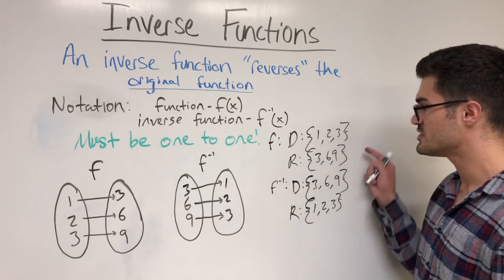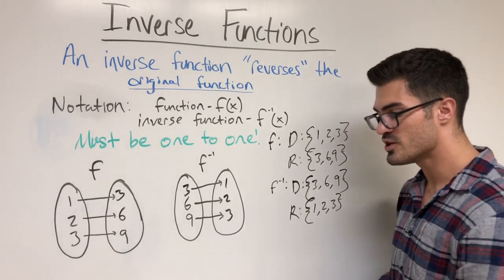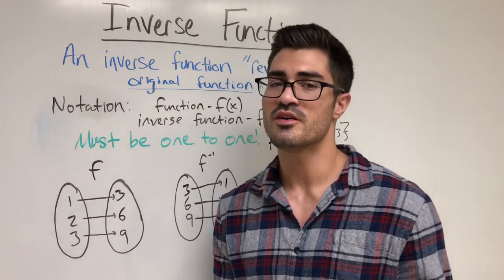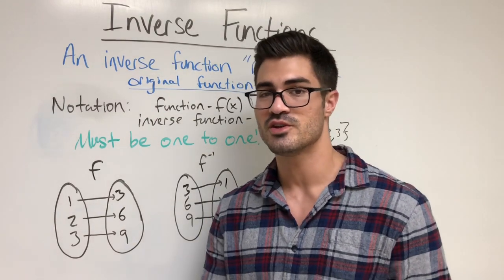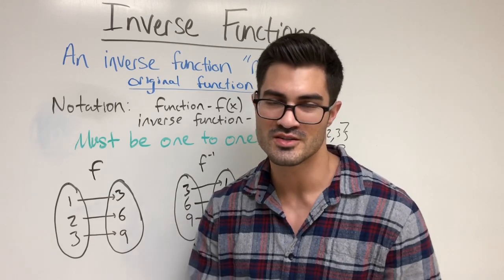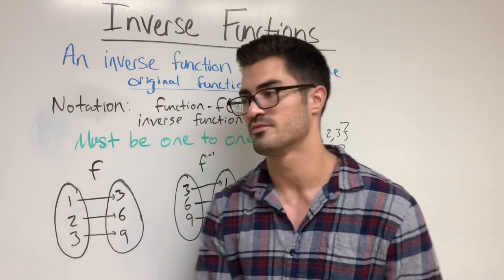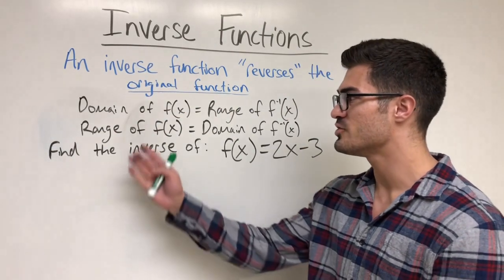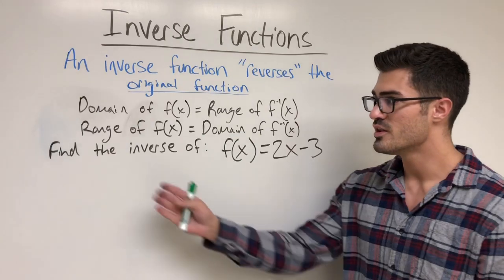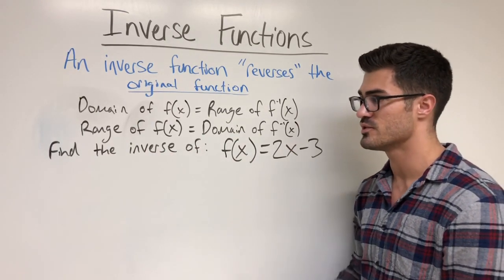They're simply flipped. The domain of the inverse function is the range of the original function, and the range of the inverse function is the domain of the original function. In general, the domain of a function equals the range of its inverse, and the range of a function equals the domain of its inverse.